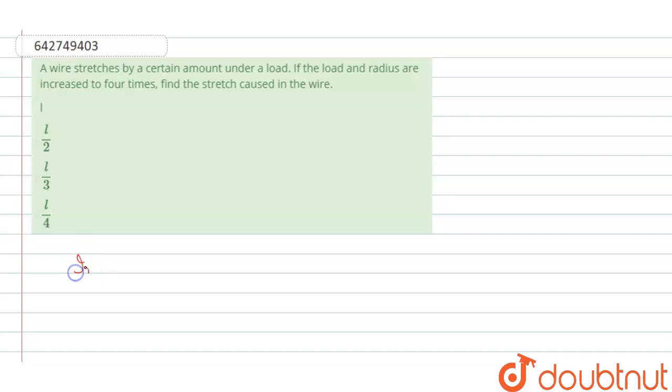Initially, the stress equals F over A, where F is the load and A is the wire area. That equals F over pi R squared.